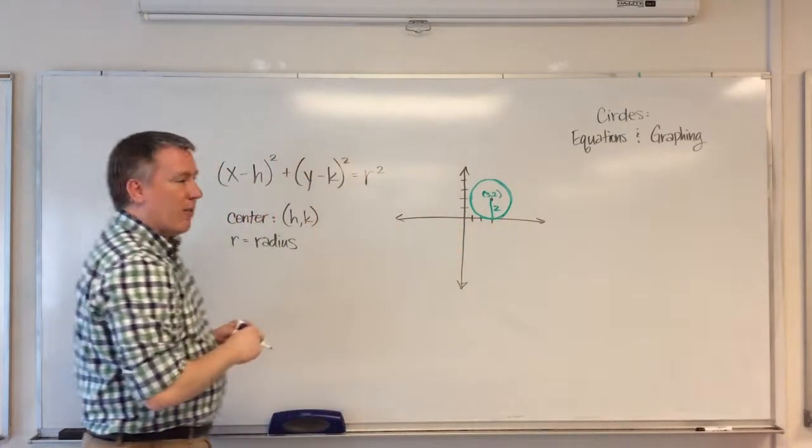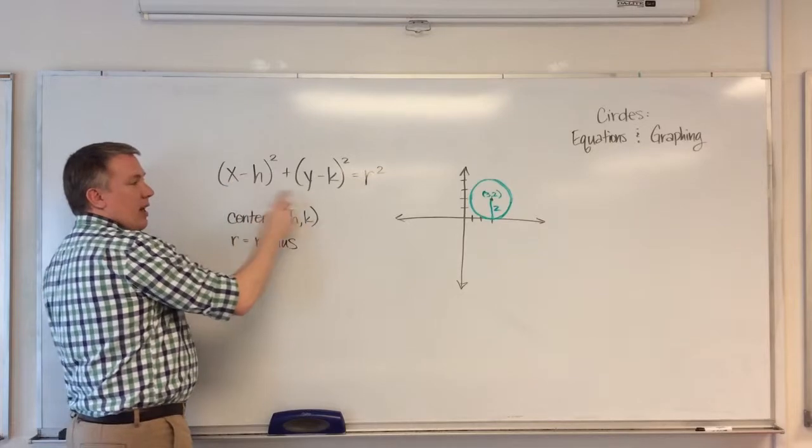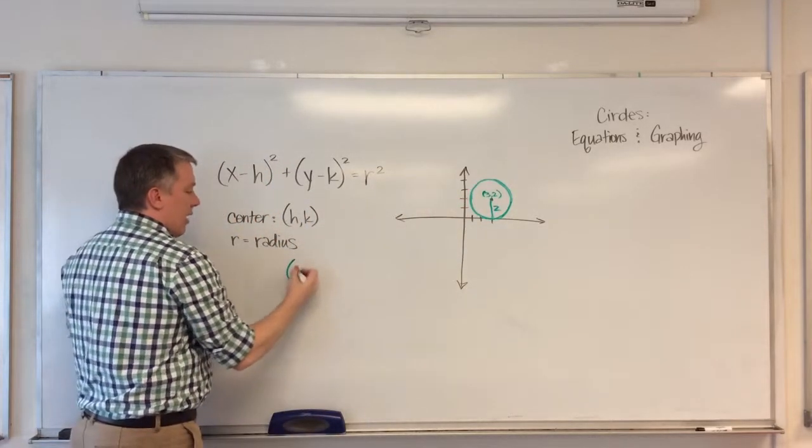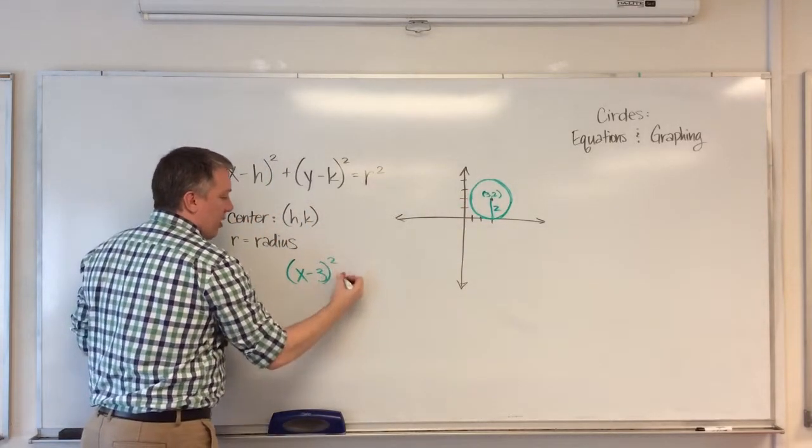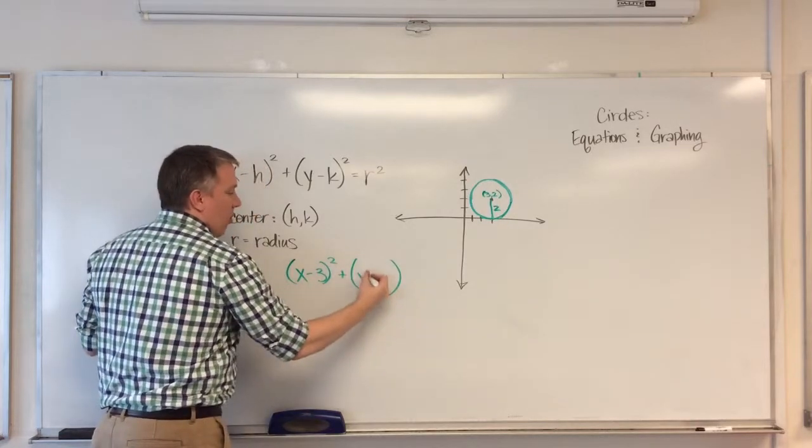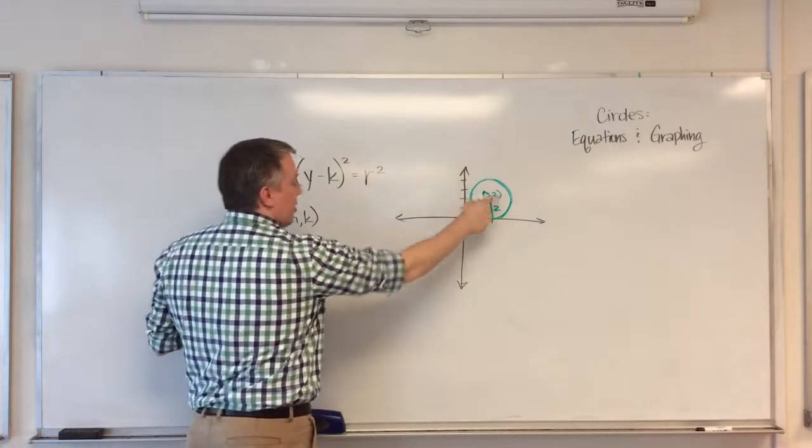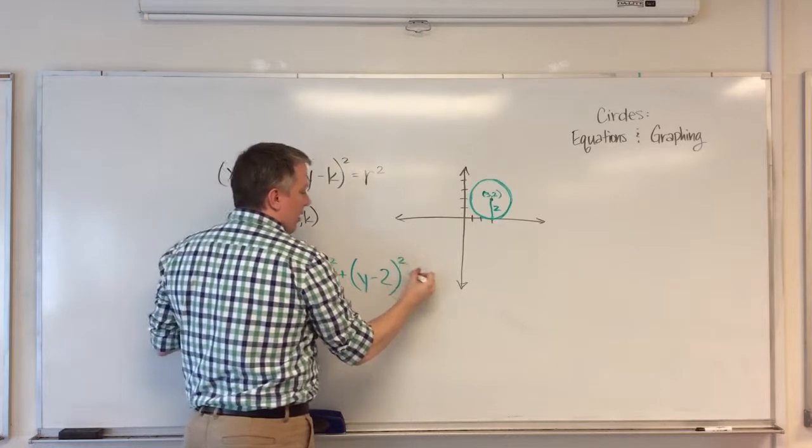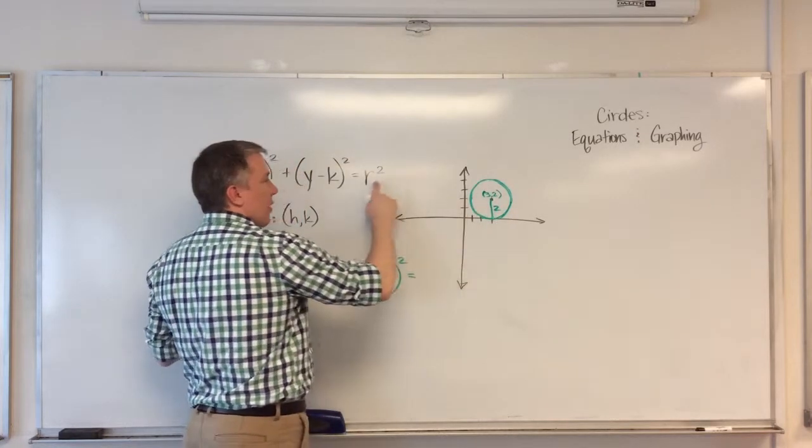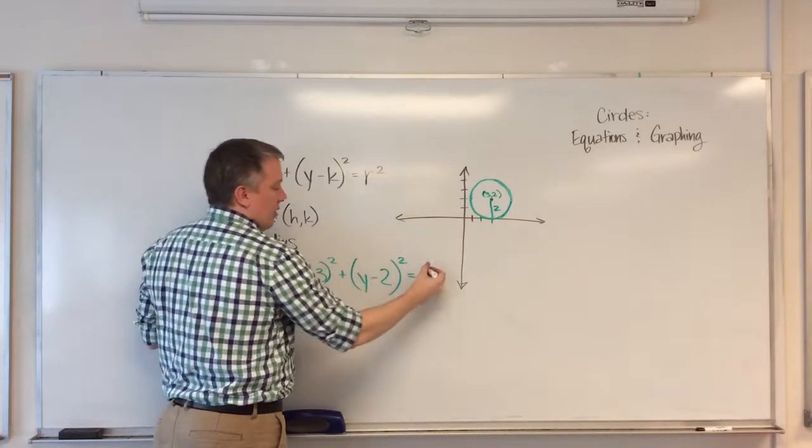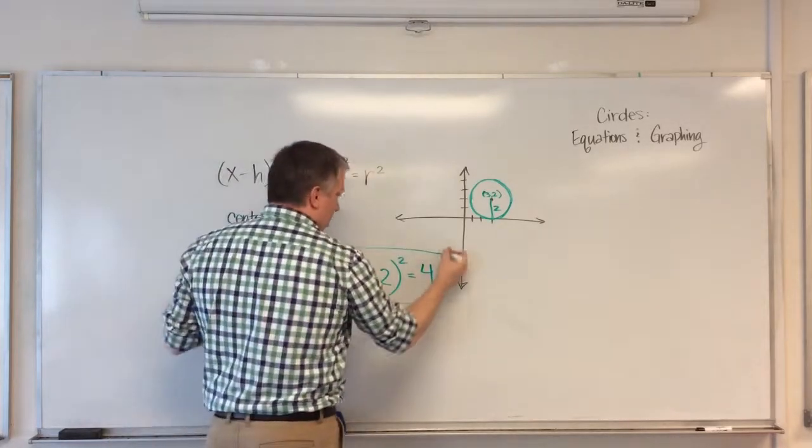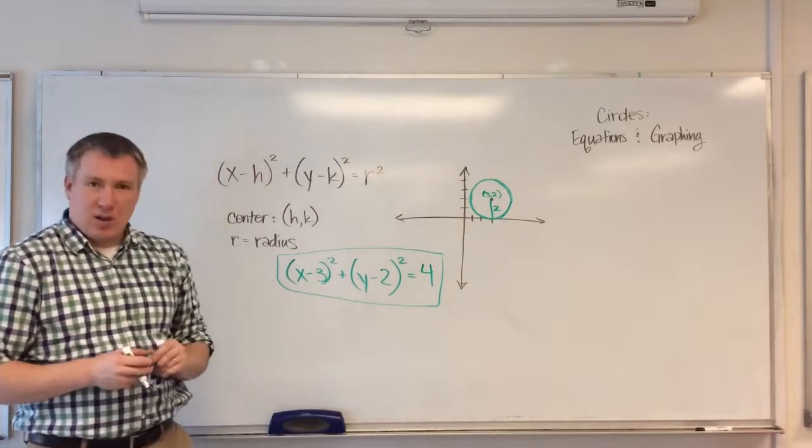So I take those numbers, plug them back in. So x minus h, h is 3, x minus 3 squared, plus parentheses, y minus k is 2, 2 squared, is equal to the radius squared. So 2 squared is 4, and that's all you have to do.